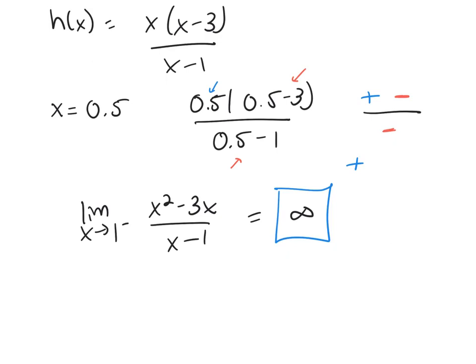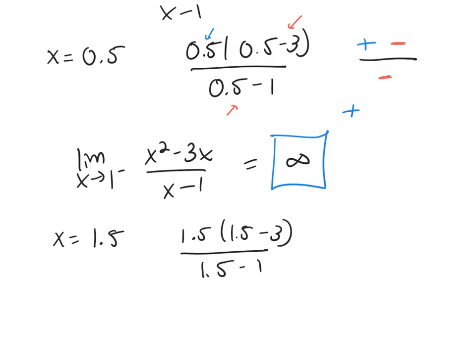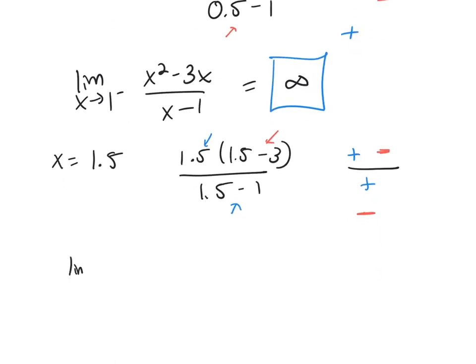Now you're going to repeat this, but pick a number. For the right-hand limit, you need a little bit bigger than 1. So pick 1.5. Plug it into your function. And again, just worry about the sign here. So this is a positive, positive. This one right here is a negative. And this one right here is going to be positive. So it looks like I'll have a negative over positive. Overall, this is going to be negative. So if I look now at my right-hand limit of my function, this limit will be negative infinity.